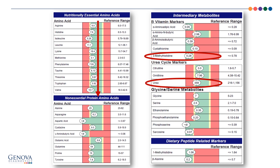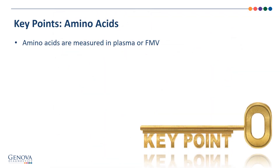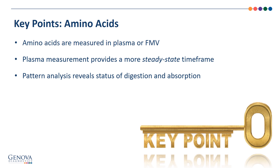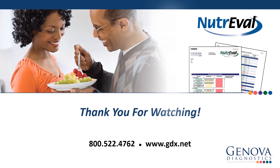The urea markers, especially the urea, indicate that they're clearing reasonably well — no issue there. The key points for amino acids: amino acids are measured in plasma or first morning void. Plasma measurement provides a more steady state time frame. Pattern analysis reveals status of digestion and absorption. Amino acids are the precursors to neurotransmitters. Thanks for listening. I'm Stephen Goldman, Medical Education Specialist at Genova, and I'll see you on the phone.